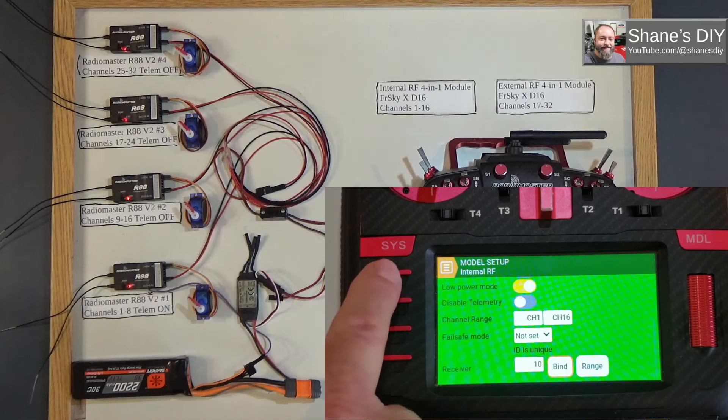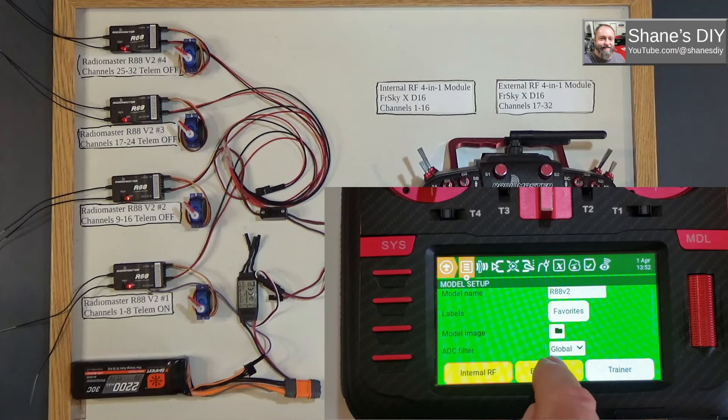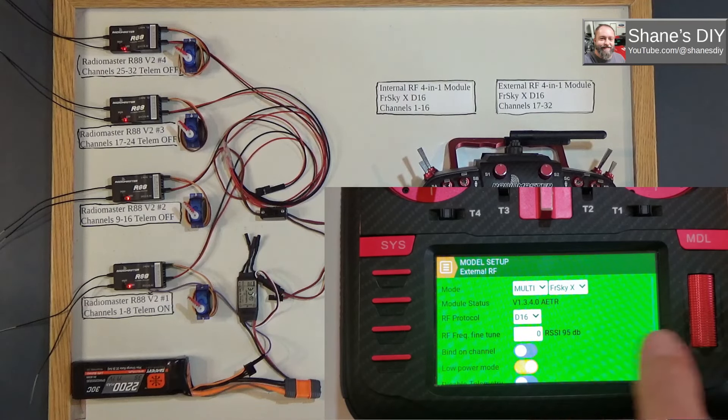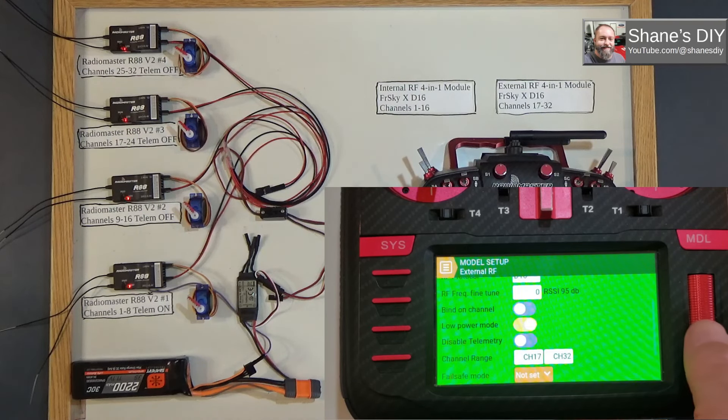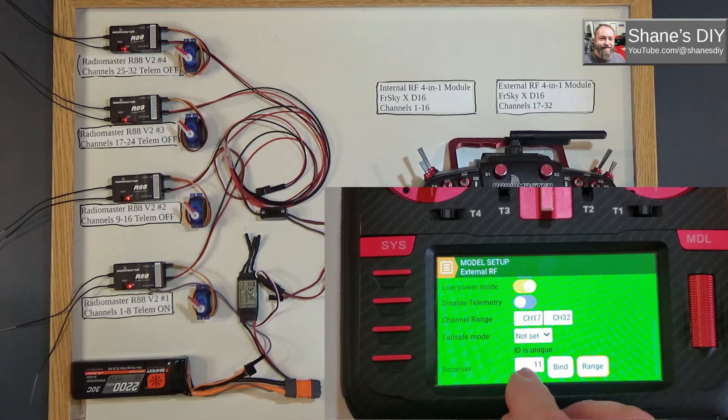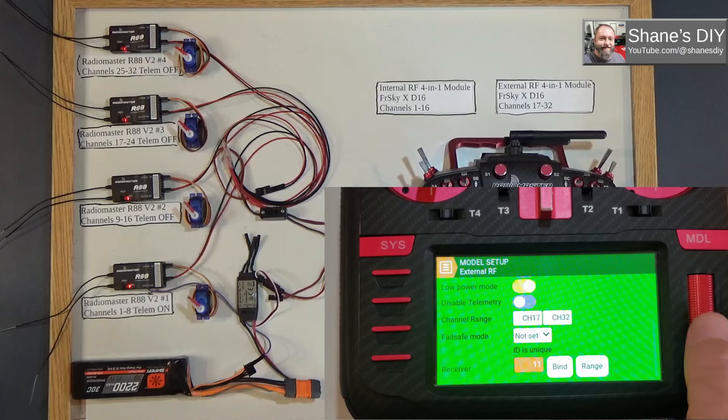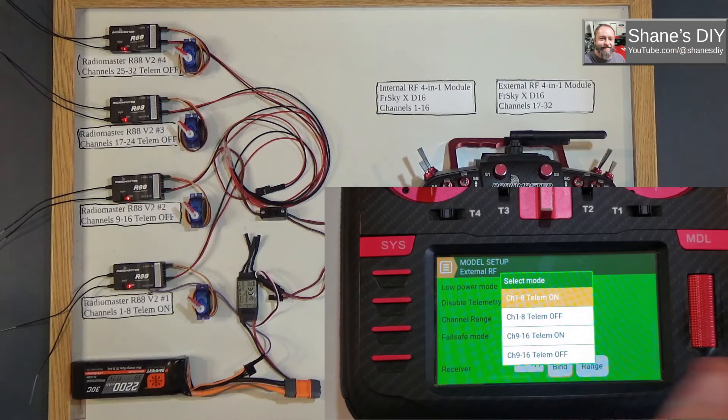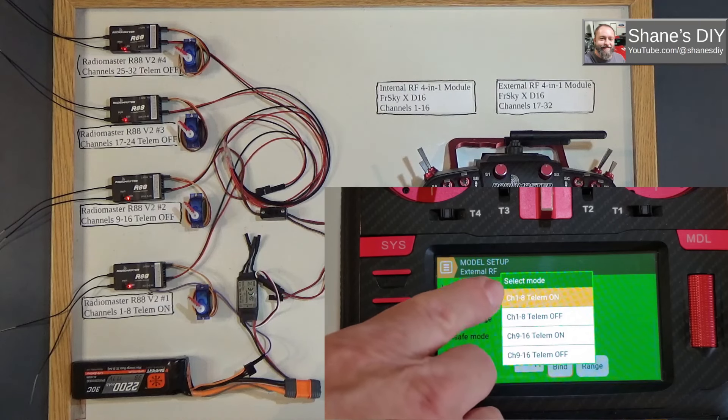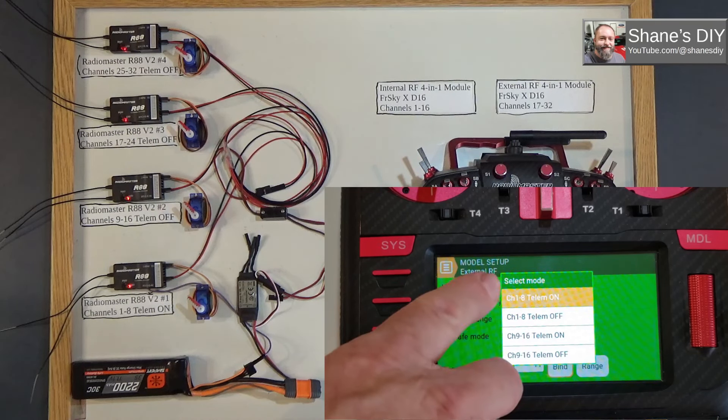Now we're going to back out and go to the external RF here. Same protocol. I've also got this one set to low power just to avoid problems here. You can see now my channel range on this one is set for 17 to 32. I've got a different receiver number. And I'm going to set up bind. Even though it's not channels 1 to 8 or 9 to 16, this is the first half and this is the second half. So you still want to do it this way.